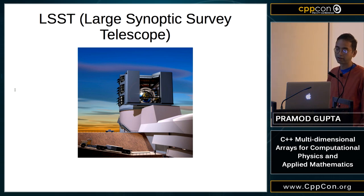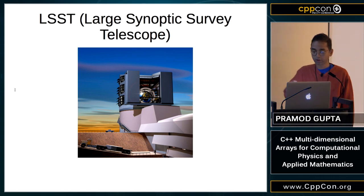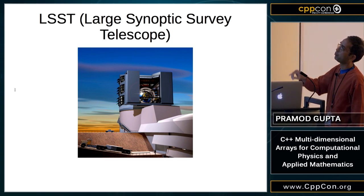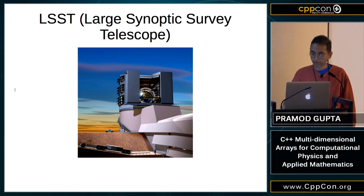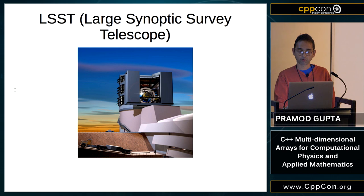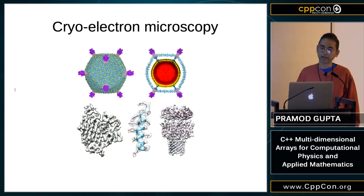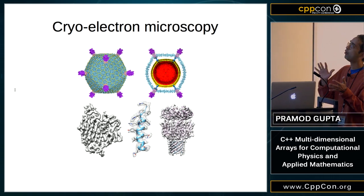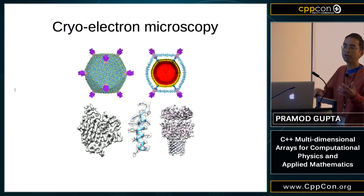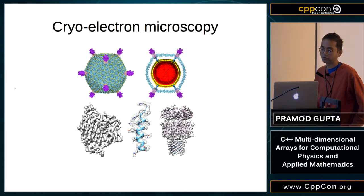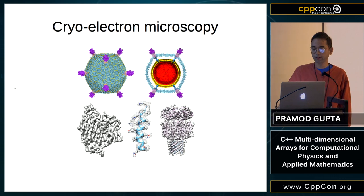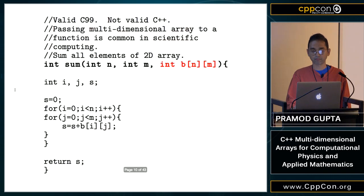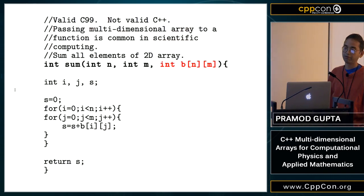All these organizations — LSST code for astronomy, RELION for cryo-electron microscopy — make their own multi-dimensional array classes. It's reinventing the wheel over and over again. Here's a telescope under construction in Chile — you can gauge the scale from the pickup truck. And in cryo-electron microscopy, 2D electron microscope images from different directions are used to reconstruct the structure of a molecule or virus. The output of all these projects is huge amounts of data processed with C++.